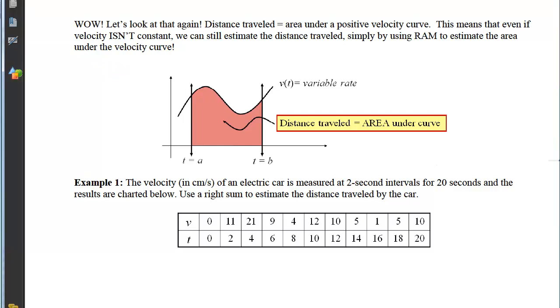Wow, let's look at that again. Turns out that the distance traveled is the area under a positive velocity curve. That means that even if the velocity isn't constant, we can still estimate the distance traveled simply by using RAM to estimate the area underneath the velocity curve. So here, if we have a non-constant variable rate for our velocity curve, that area underneath is still going to represent the distance that is traveled.